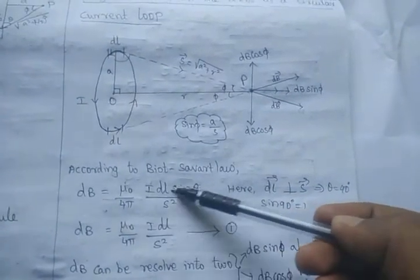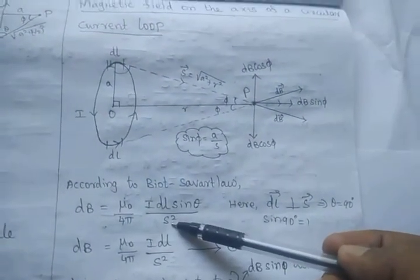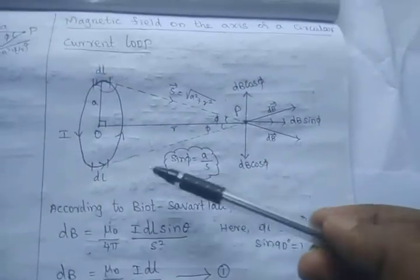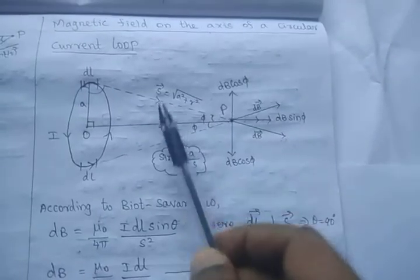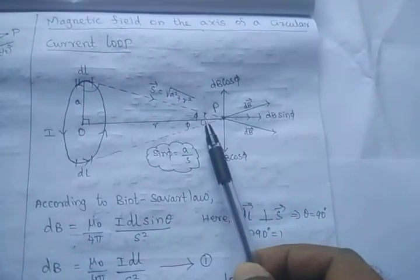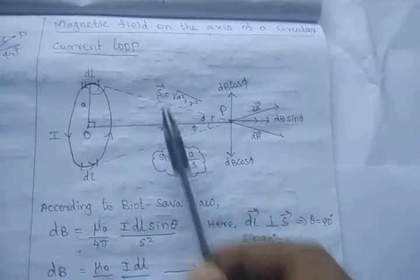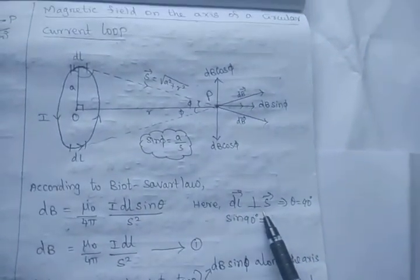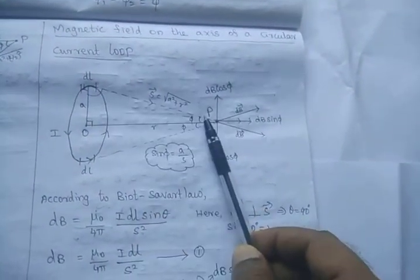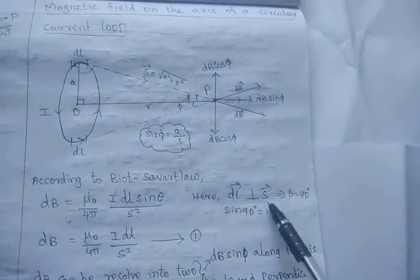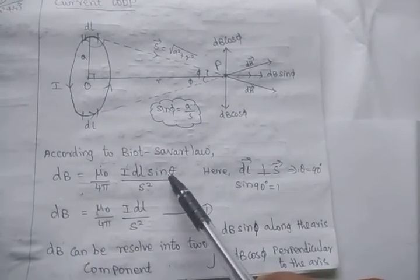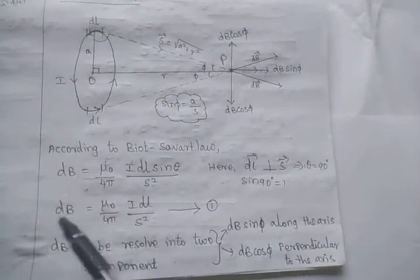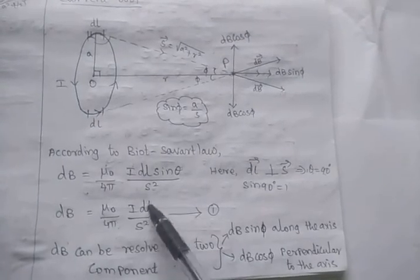So B = (μ₀/4π) × I dl sinθ / S². First, understand the diagram. This is a small elemental length dl; the joining line to point P is S, which makes the angle. The dl and S vectors make an angle of 90°. So sin 90° = 1, and substituting θ = 90°, we get dB = (μ₀/4π) × I dl / S².